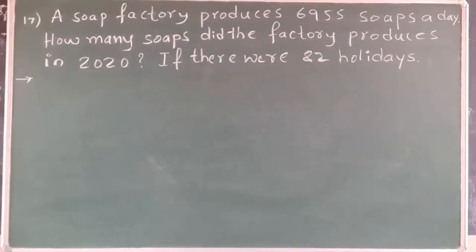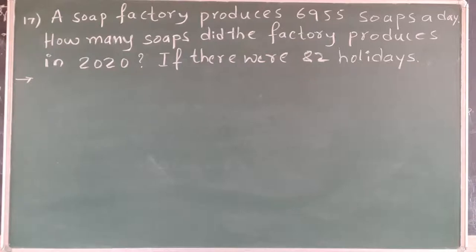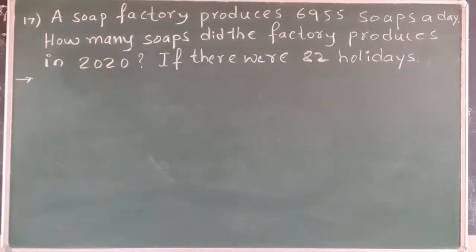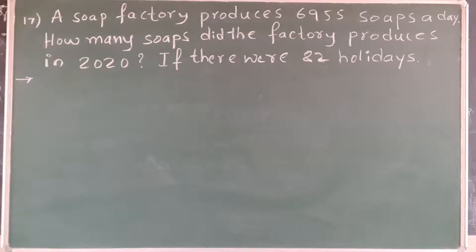A soap factory produces 6,955 soaps a day. How many soaps did the factory produce in the year 2020 if there were 82 holidays? First of all, we should know whether 2020 is a leap year or a normal year. It is a leap year because in the month of February there are 29 days in this year. So total number of days in the year 2020 is 366 days.